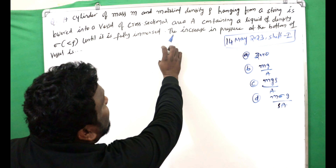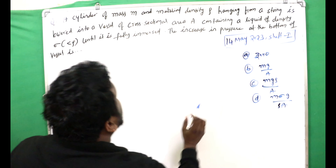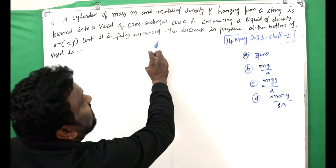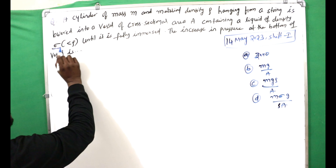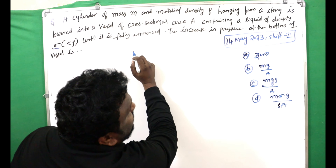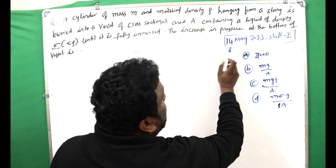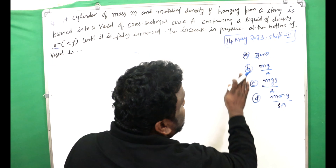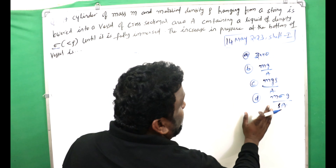The next question: a cylinder of mass m and material density ρ, hanging from a string, is lowered into a vessel of cross-sectional area A containing a liquid of density σ (where σ < ρ), until it is fully immersed. The increase in pressure at the bottom of the vessel is to be found. Options are: 0, mg/A, mgρ/A, or mgσ/ρA.